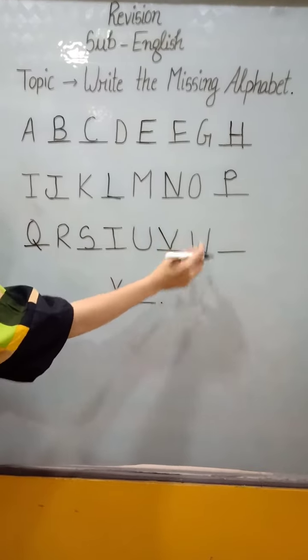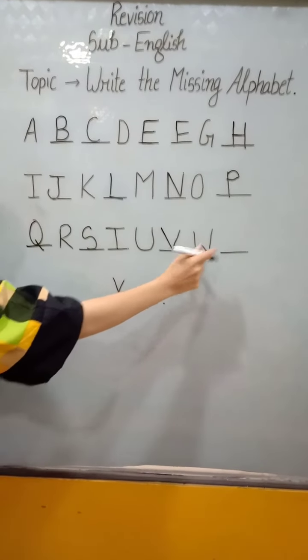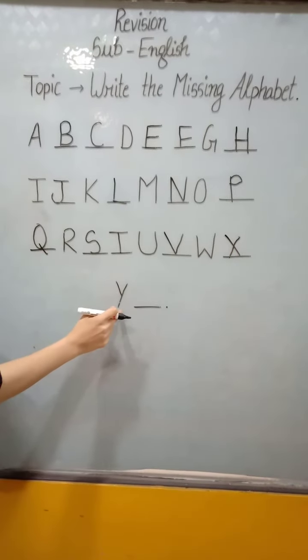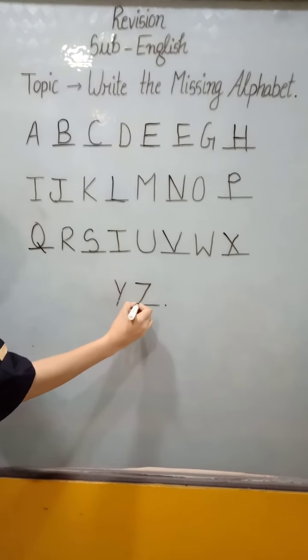V. W. What comes after W? X. Y. Then last is Z for Zebra.